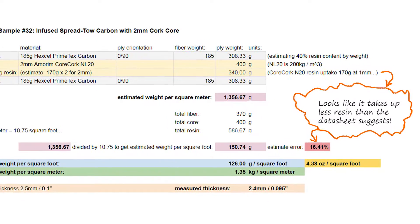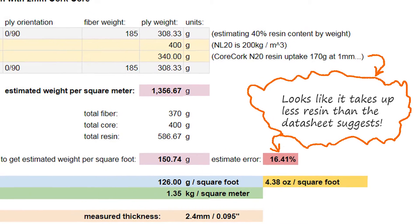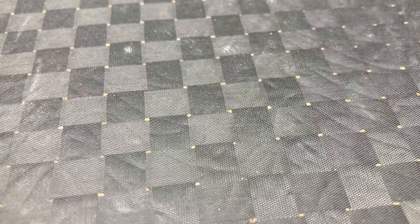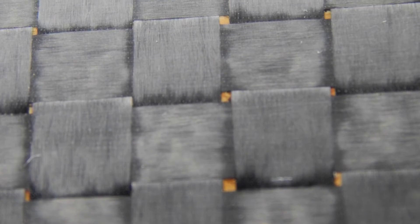Here you can see my resin mismatch. Turns out it used quite a bit less resin than it was supposed to. Some close-ups of the panel. You can see the cork showing through, but the nice tight spread toe surface.